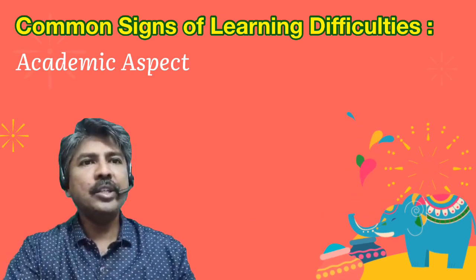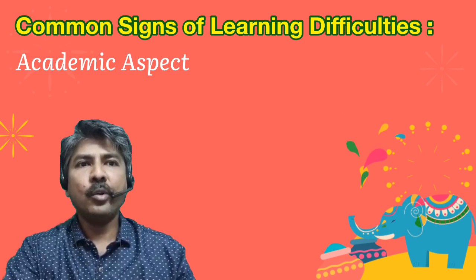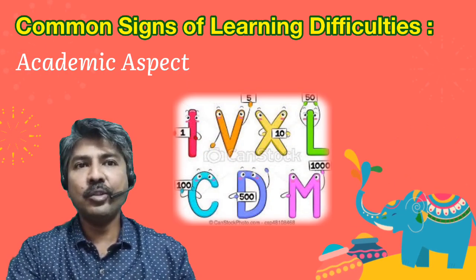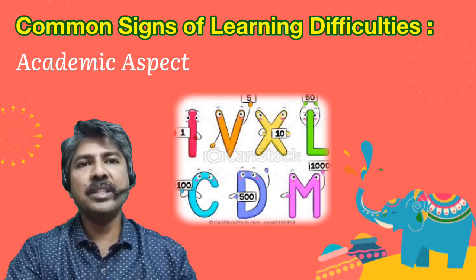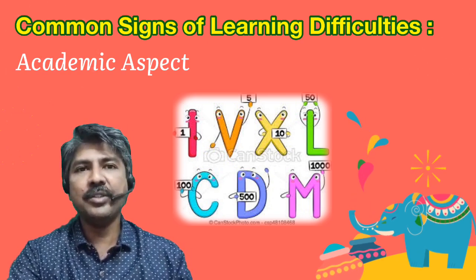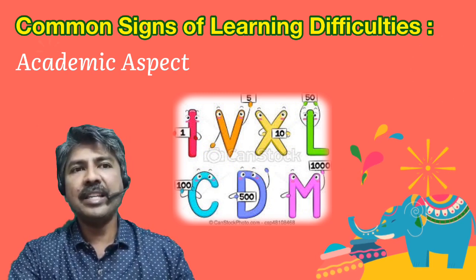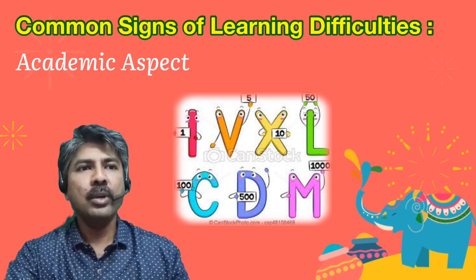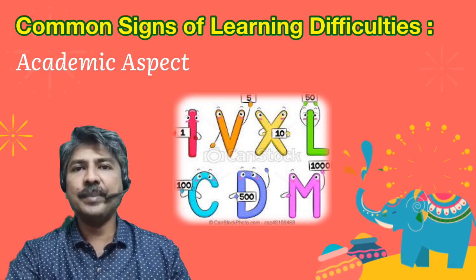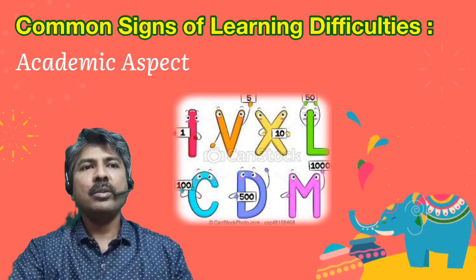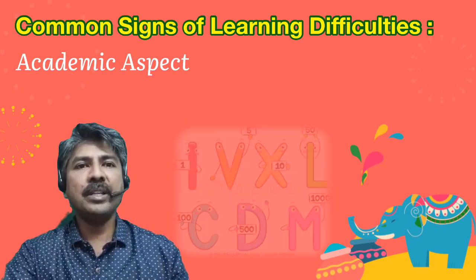Further academic signs include the ability to count aloud but not to write down the numerals, trouble following classroom direction and expressing thoughts aloud, difficulty understanding simple instructions, difficulty grasping concepts despite receiving additional help and support in school, forgetfulness of what has been learned, and difficulty completing homework.